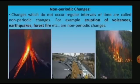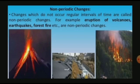On the other hand, it cannot be said for sure when certain changes will occur after one occurrence. Even if they occur, the time interval is not fixed. Such changes are called non-periodic changes. Changes which do not occur at regular intervals of time are called non-periodic changes. For example, eruption of volcanoes, earthquakes, and forest fires are non-periodic changes.